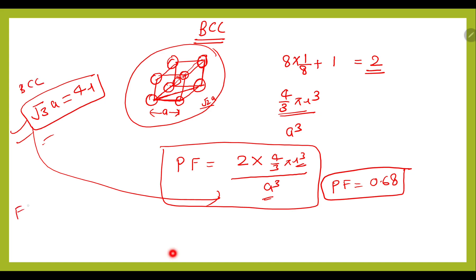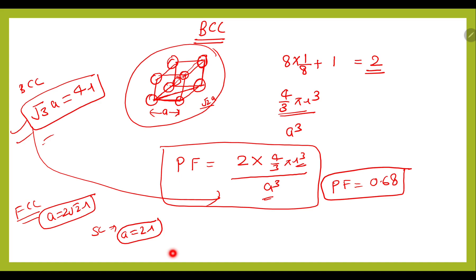Similarly, for FCC the relationship between a and r is a = 2√2·r. For simple cubic it is a = 2r. These three relationships are very important for calculating packing factors.